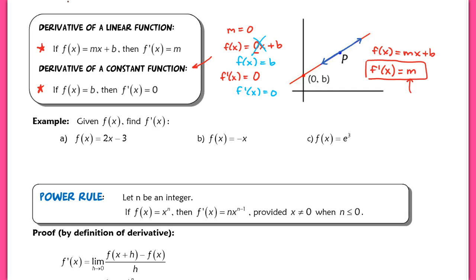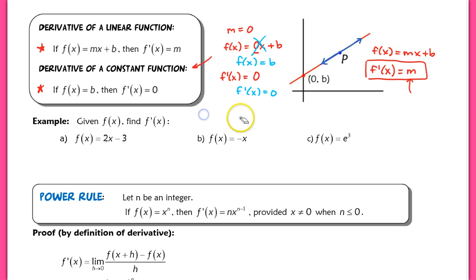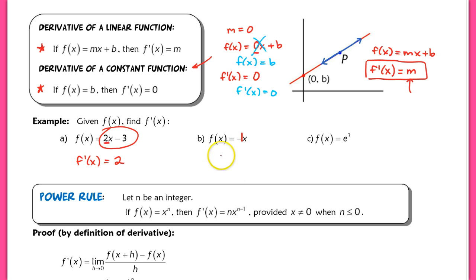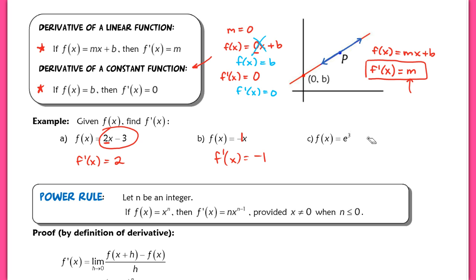Let's try examples using these rules instead of the full limit definition. For a linear function, the derivative is just the slope. So for f(x) = 2x + something, f prime of x = 2. For f(x) = −x + something, f prime of x = −1. And for f(x) = e³ — remember, e is just a number, about 2.74, so e³ is a constant — f prime of x = 0.